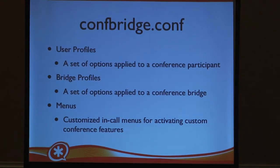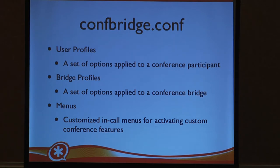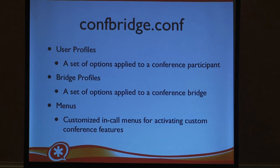The new ConfBridge has a lot of interesting configuration possible that you weren't able to do before. There's a configuration file where you define profiles related to the ConfBridge itself, profiles for users joining ConfBridges that apply a bunch of different options, and we can also do customized menus. In the older iterations of conferencing support in Asterisk, there were in-call menus — you hit the star key and then some number — but all of that was hard-coded. Both what the features do and what keys map to those features were not anything you could change, but now you can completely customize that.